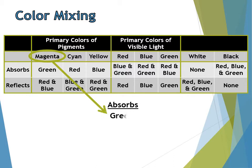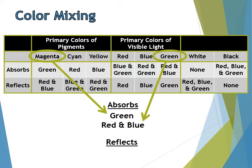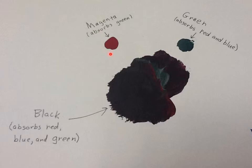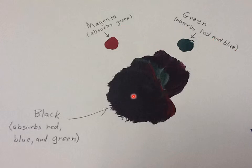If we take magenta — which absorbs green — and mix it with green pigment, which absorbs red and blue, together they absorb green, red, and blue — everything — leaving nothing to reflect, so the result is black. I mixed some magenta paint and green paint together and you can see that it produces black. Note that magenta can easily be mistaken for red, which is mainly why the three primary colors of pigments are often referred to as red, blue, and yellow. Because red and magenta look alike, and blue and cyan look alike in pigments.